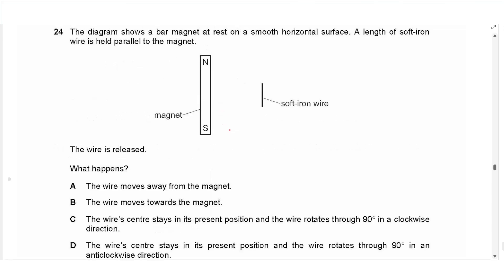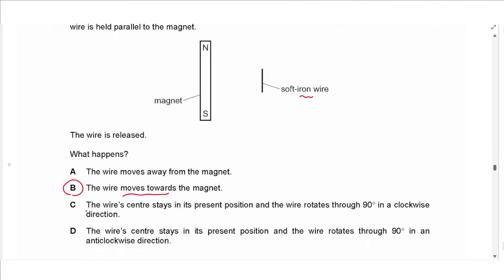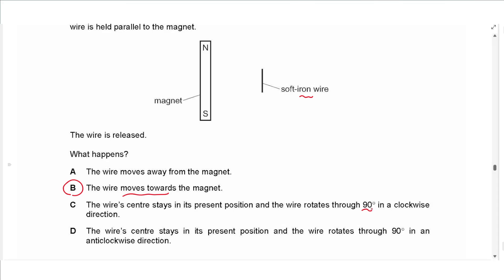Question 24: a bar magnet rests on a smooth horizontal surface and a length of soft iron wire is held parallel to it, then released. Iron is a magnetic material, so it is attracted and moves towards the magnet. A soft iron wire is not itself a permanent magnet, so it won't align like a compass needle and rotate 90°. The answer is B.